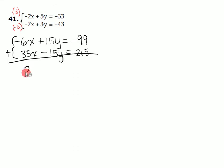Negative 15y plus positive 15y is 0. And then negative 99 plus 215 is going to give us 116. Now let's divide both sides of the equation by 29. And 116 divided by 29 is 4.